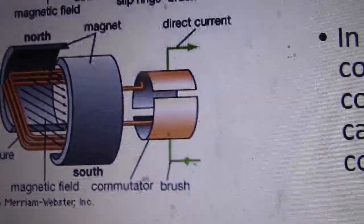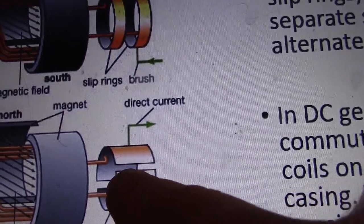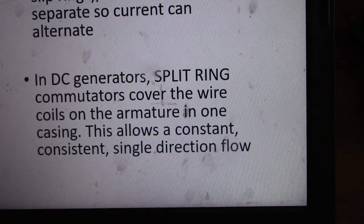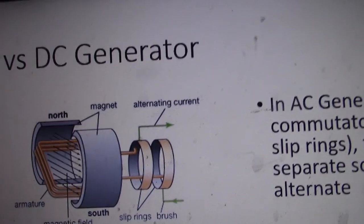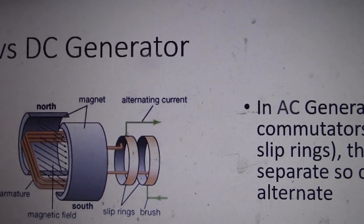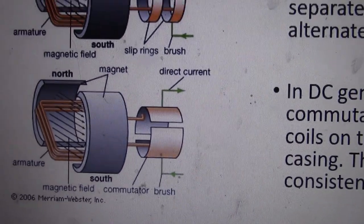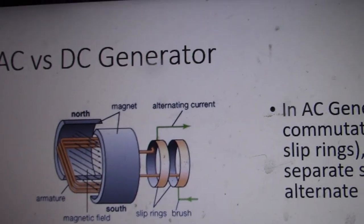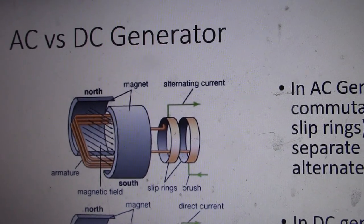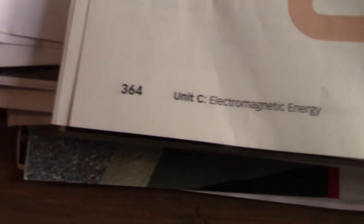With the split ring you only have one direction for flow. DC generators use split ring commutators and AC generators use slip ring commutators. The slip rings are two points of contact and the split ring is one point of contact — it's a little confusing because the slip ring looks like it's split. In your textbook page 364 there's a really good question asking you to identify what different devices are.